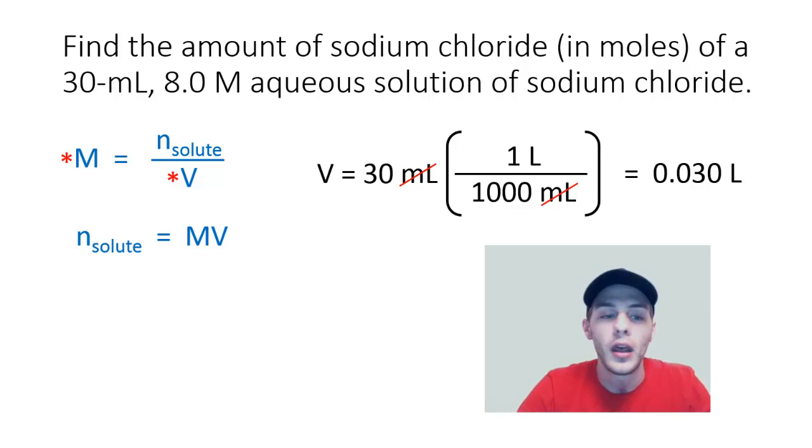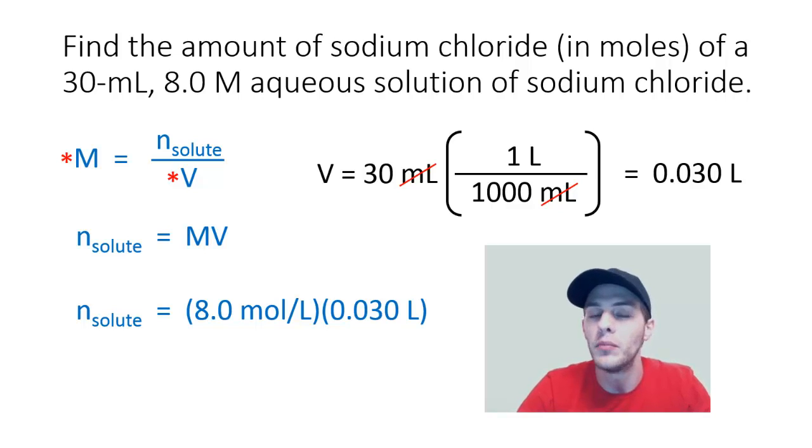So now we have a volume in liters and we can simply plug that into our equation so we get the amount of solute in moles is going to be 8.0 moles per liter, which again moles per liter is just another unit of molarity. The capital M for molarity or molar just means moles per liter. So it's 8.0 moles per liter times 0.030 liters and the amount of solute in moles is going to be 0.24 moles of sodium chloride.